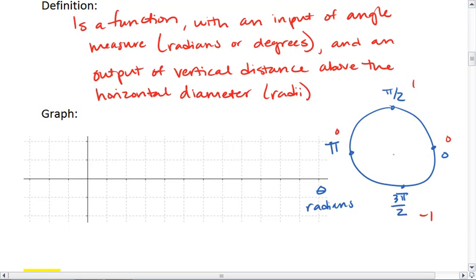So sine of 0, when we're at this far right location, we are 0 radius lengths above our horizontal diameter. We get the point 0, 0.